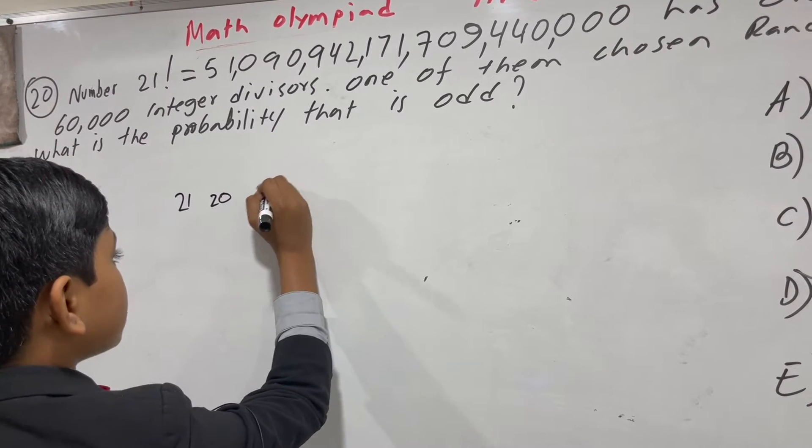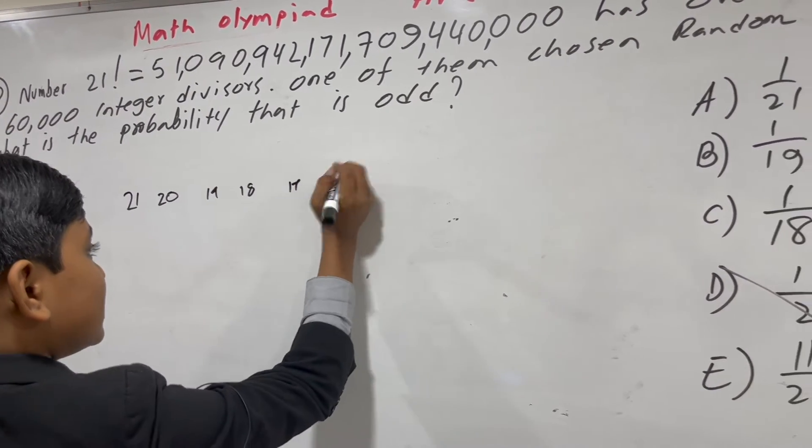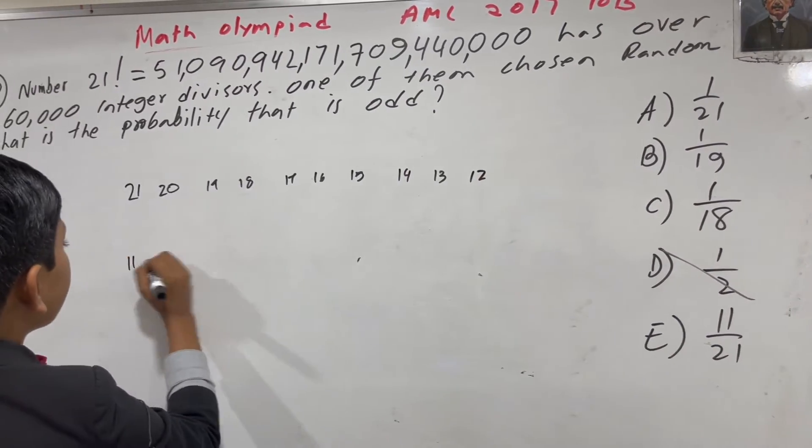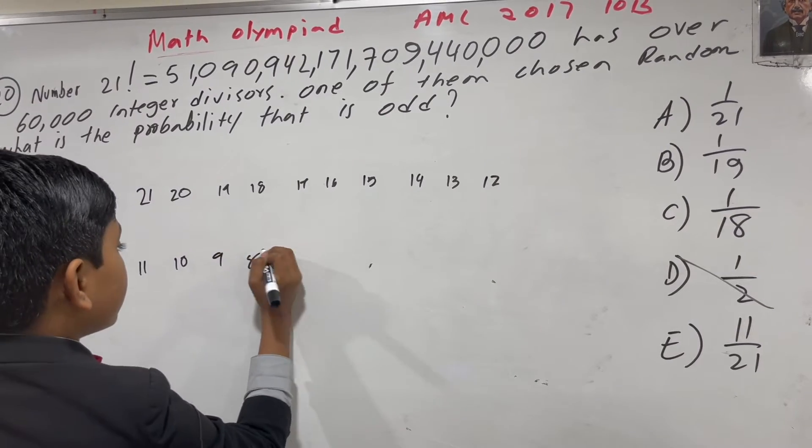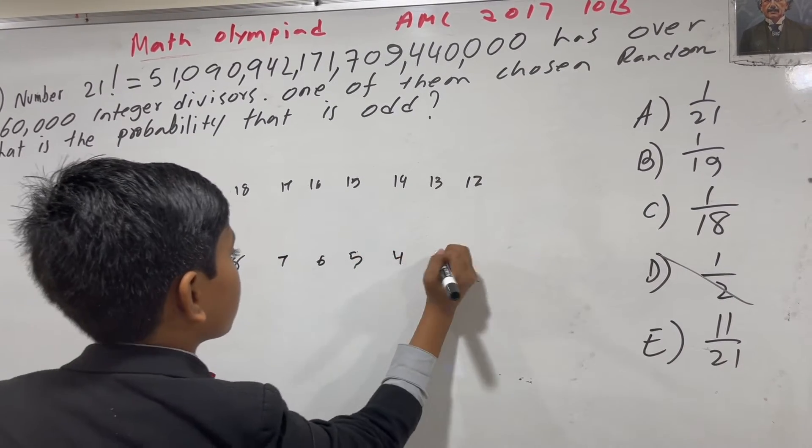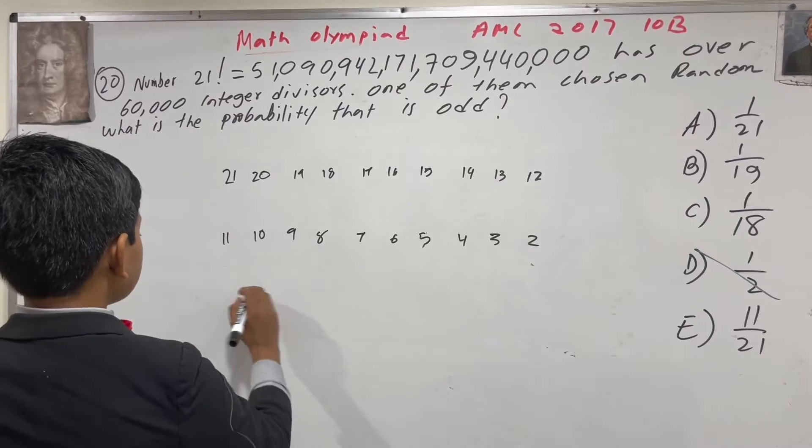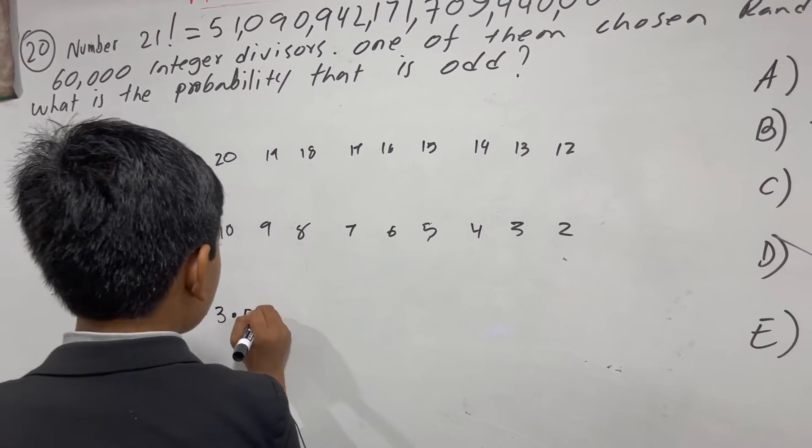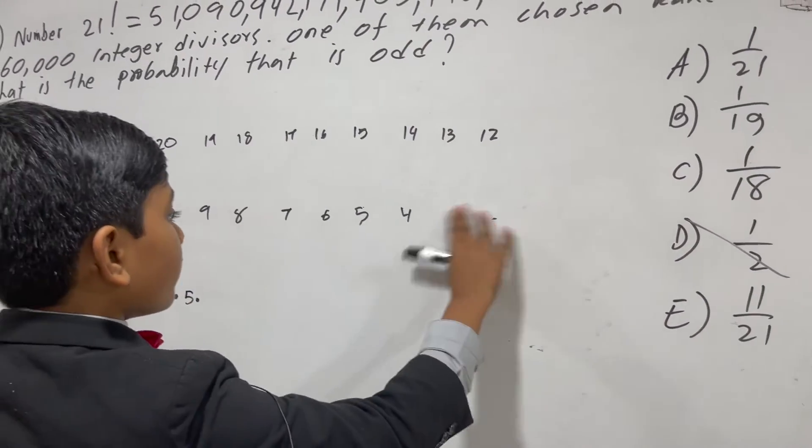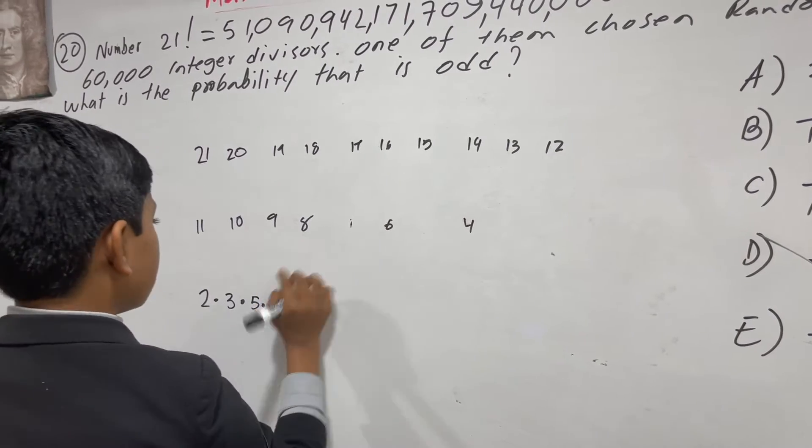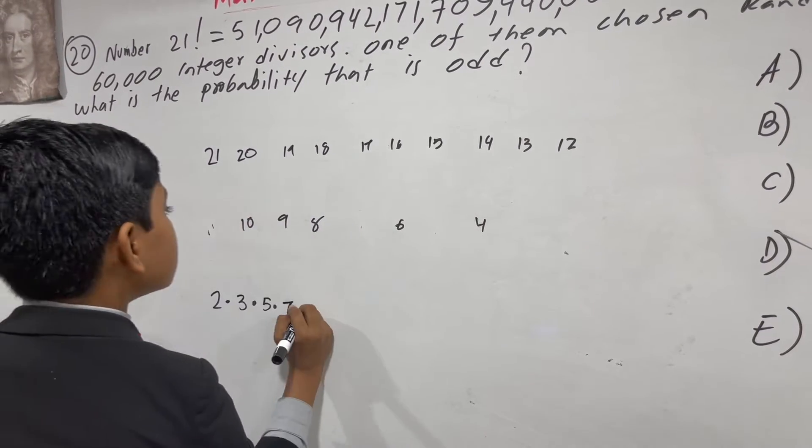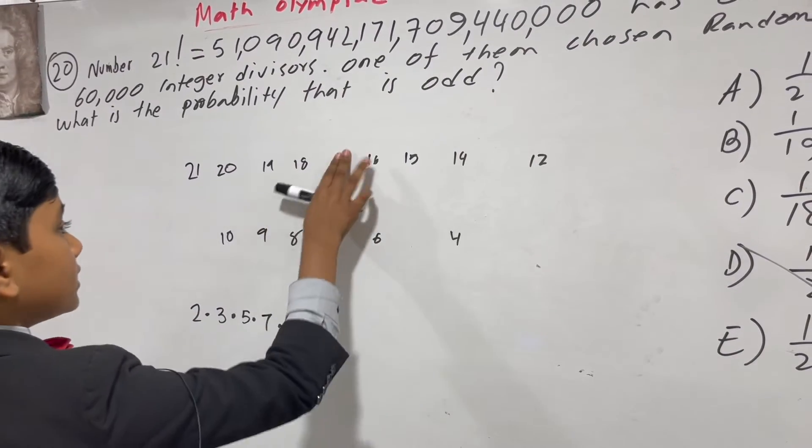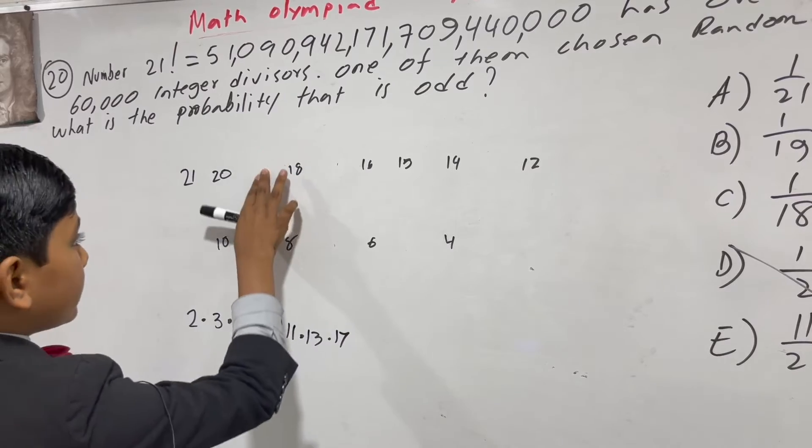Which go like this: 21, 20, 19, 18, 17, 16, 15, 14, 13, 12, 11, 10, 9, 8, 7, 6, 5, 4, 3, 2. Let's first take out all of the prime ones: 2, 3, 5, 7, 11, 13, 17, and 19.